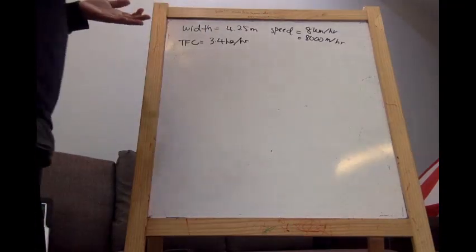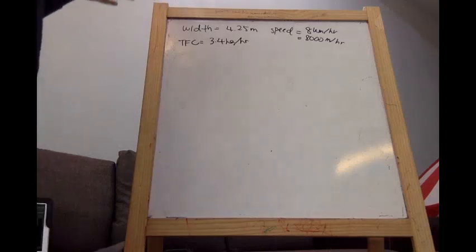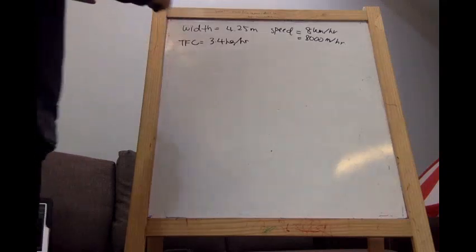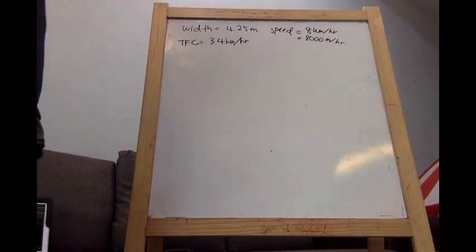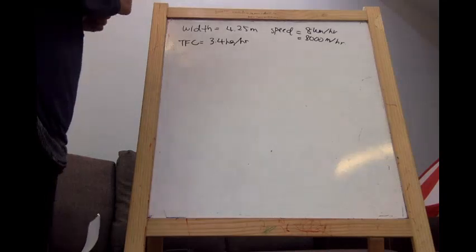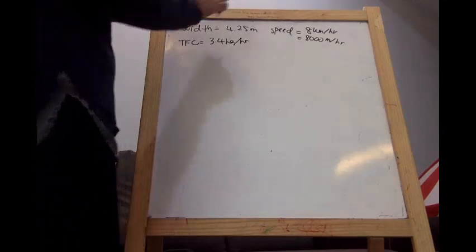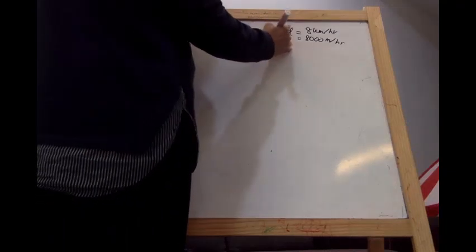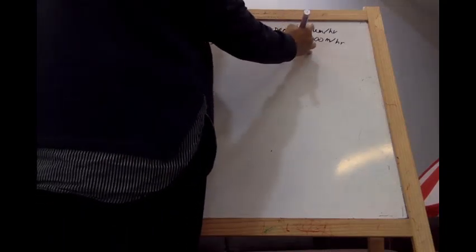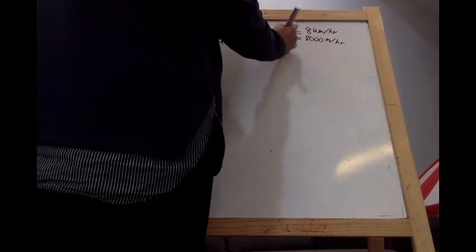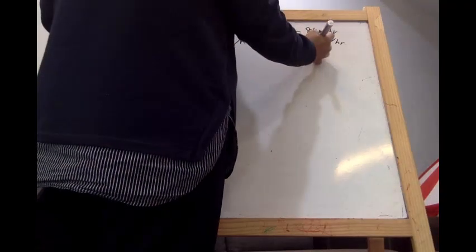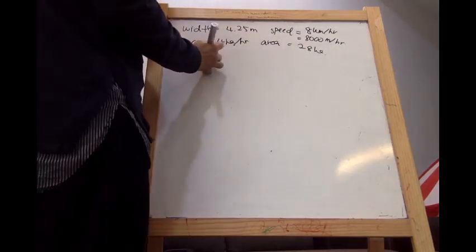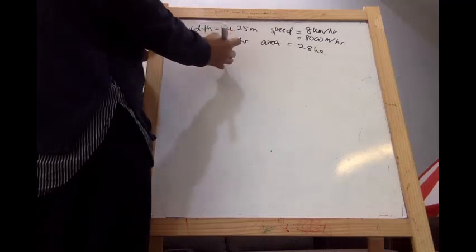For example number four, this is a continuation from example three. The same tractor covers 28 hectares in real life. We need to find the EFC. There are two formulas for EFC. The first one is: EFC equals total hectares covered divided by total hours.